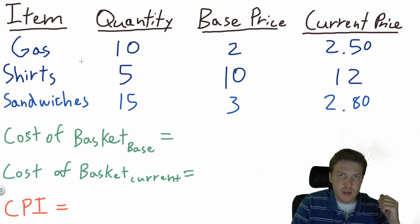Let's assume hypothetically that the typical American family buys this simplified basket of goods. They're going to buy 10 gallons of gasoline, 5 shirts, and 15 sandwiches.